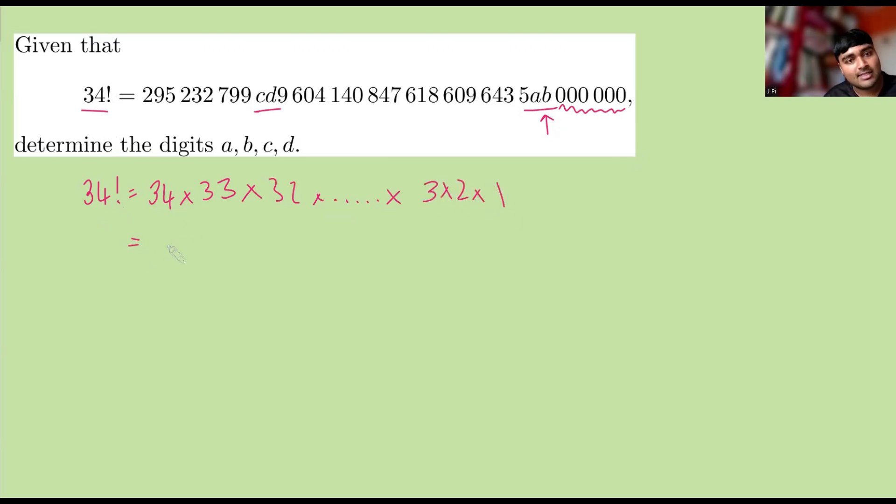But if we write this in its prime factorization, it's going to be 2 to the something times 3 to the something times 5 to the something times 7 to the something. And I can keep going, listing out the primes all the way up to 31 in this case, because that's the biggest prime number less than 34. So 34 factorial could be written like this, where we have different numbers here.